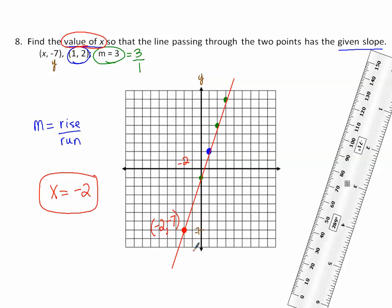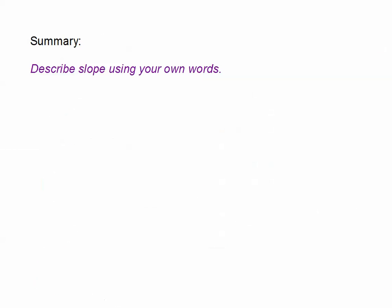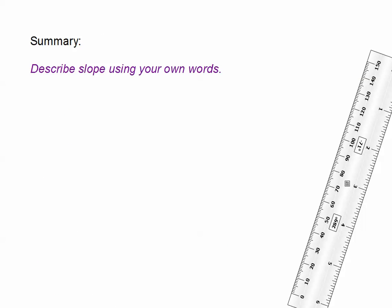To verify, continuing to count from the last plotted point — down 3, left 1; down 3, left 1 — I land right on that point, confirming x equals negative 2. Take a couple of minutes to do a short summary and describe slope using your own words. See you in class!